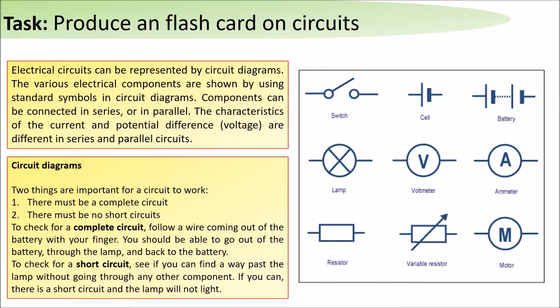To check for a complete circuit, follow the wire coming out of the battery with your finger. You should be able to go out of the battery through the lamp, for example, and back to the battery. To check for a short circuit, see if you can find a way past the lamp without going through any other components. If you can, then there is a short circuit and the lamp will not work.